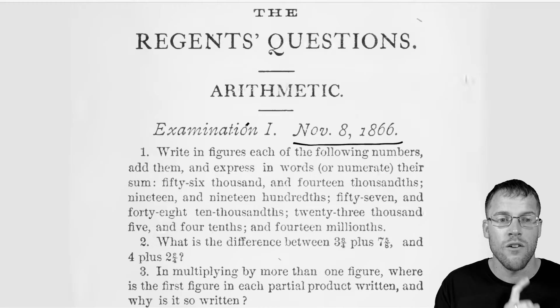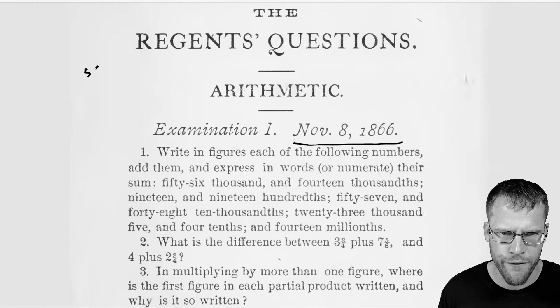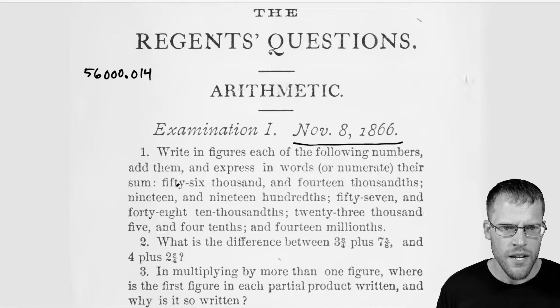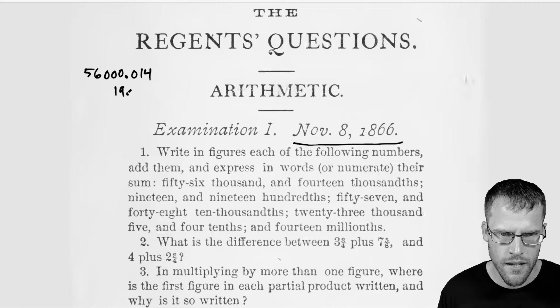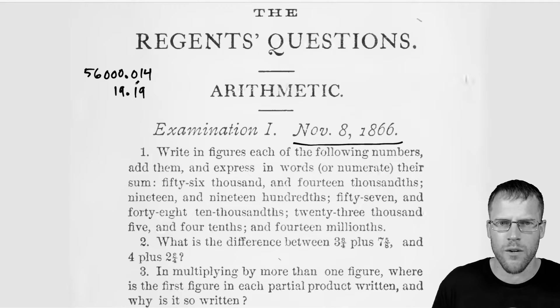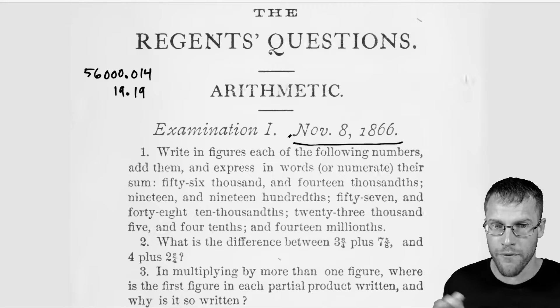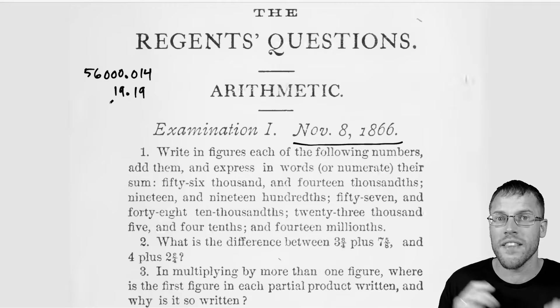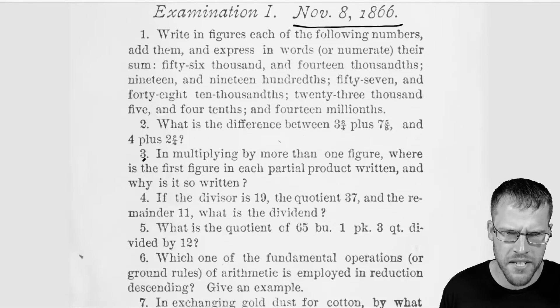So first up here, write in figures each of the following numbers, add them, express in words or numerate their sum. So we have 56,000 and 14,000, and then we have 19 and 19 hundredths. So this just seems like we're turning these numbers from word form into number form. We're going to add them and then we're going to write that answer in words. So not too crazy difficult, but definitely a bit tedious.